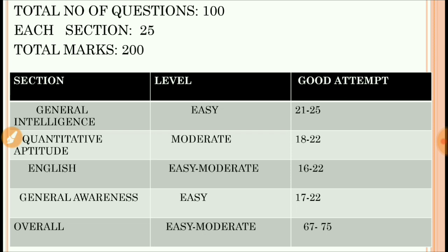Quantitative Aptitude was moderate. If you are good enough at maths then 18 to 22 is the good attempt, or if you are more good then you can attempt 24 to 25.